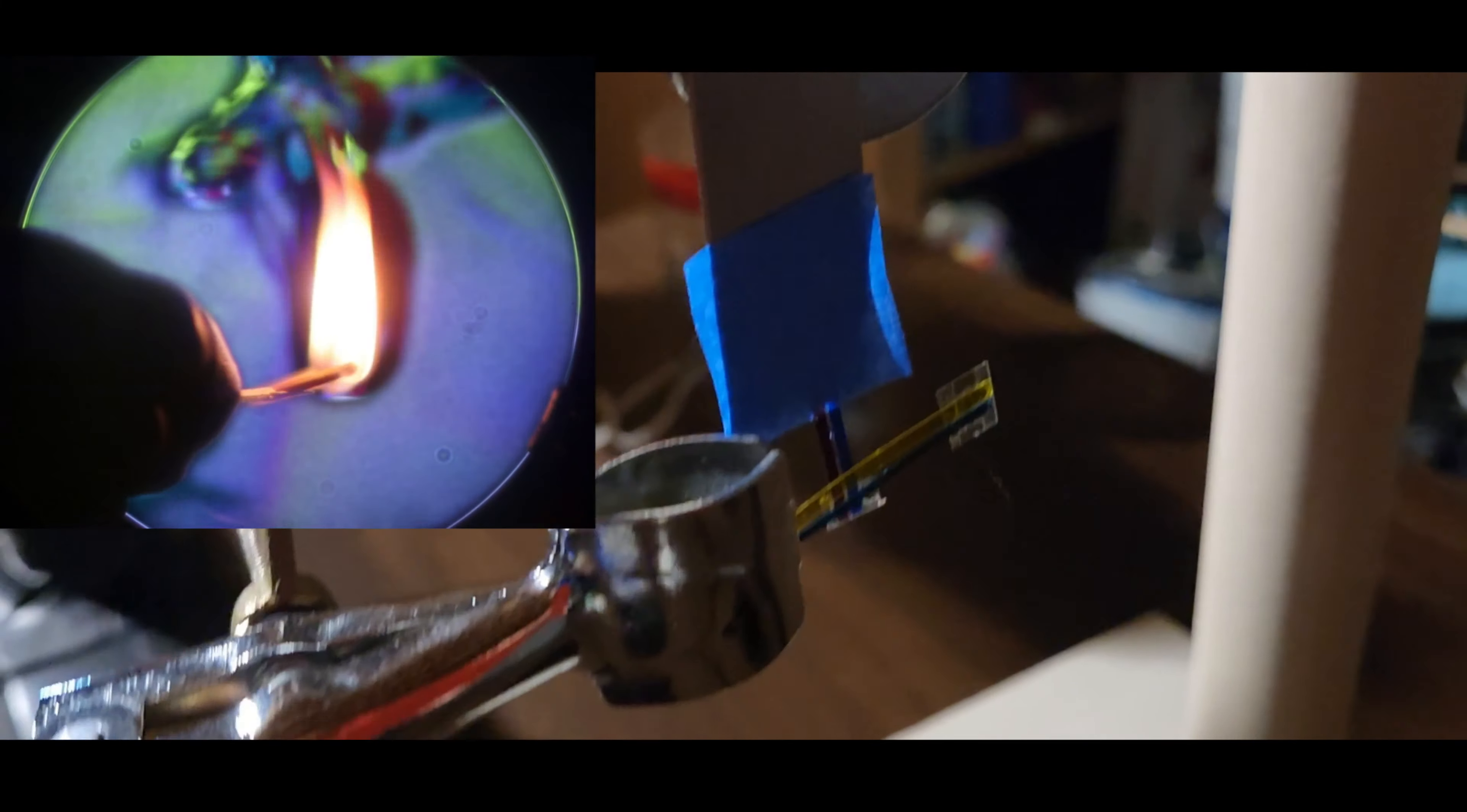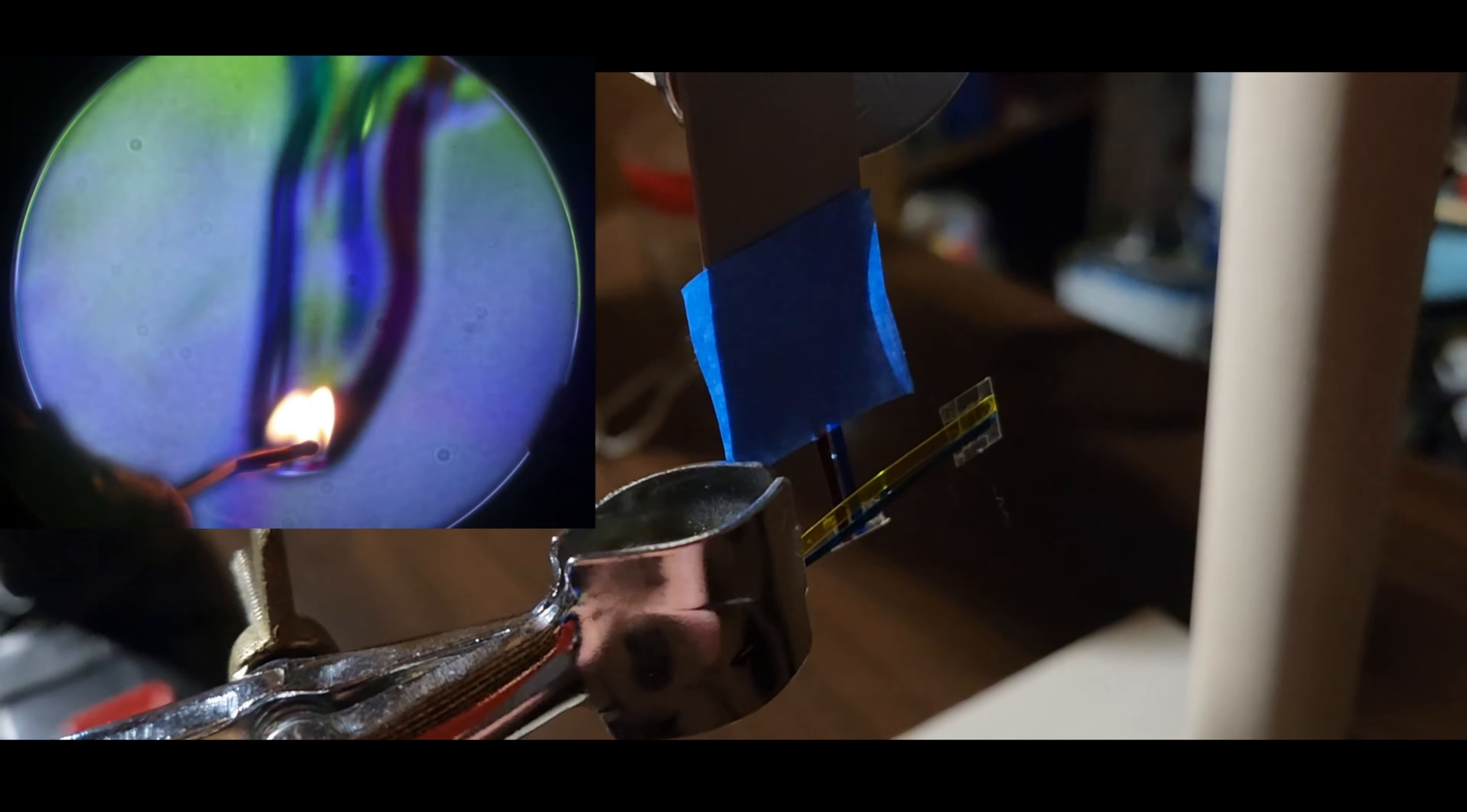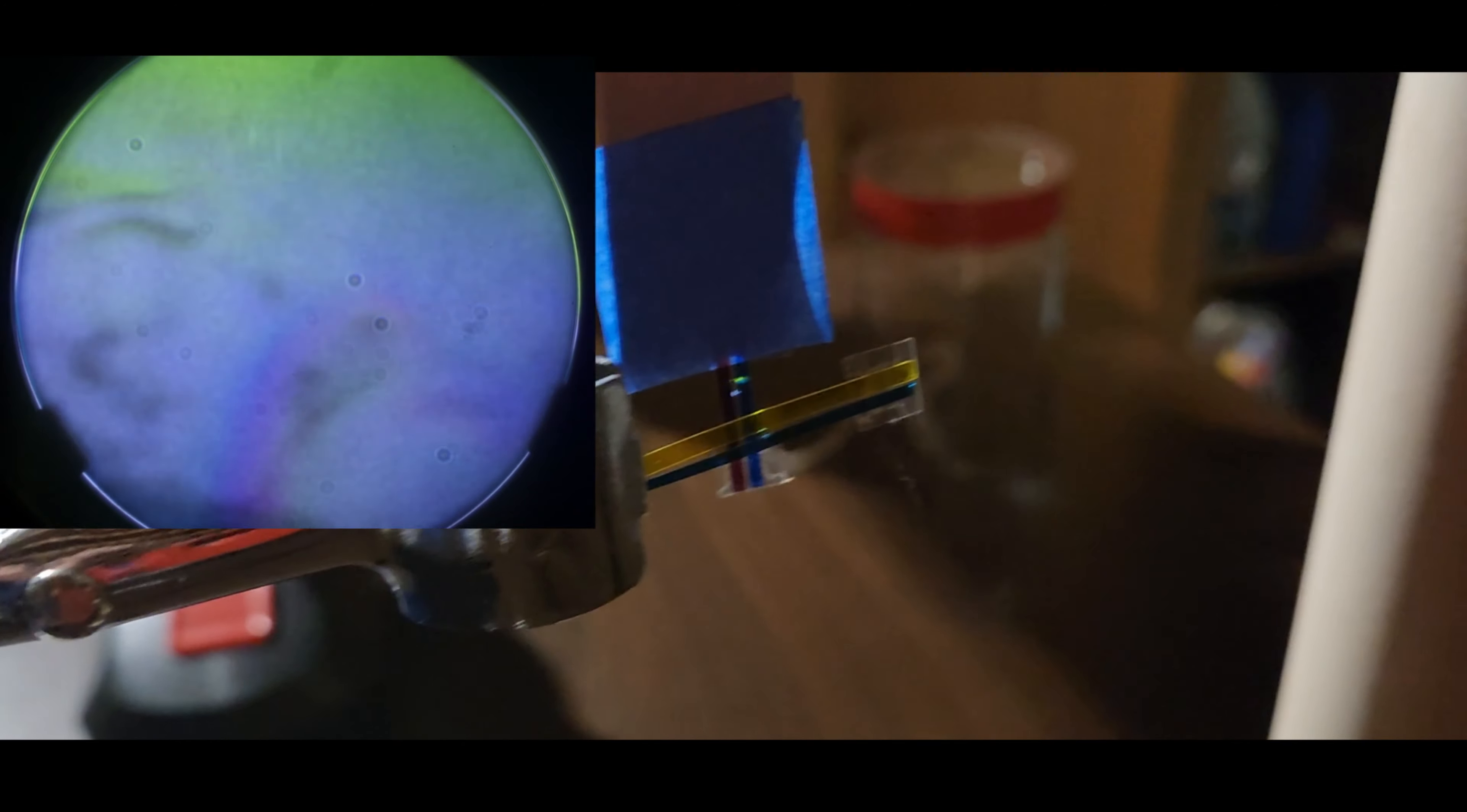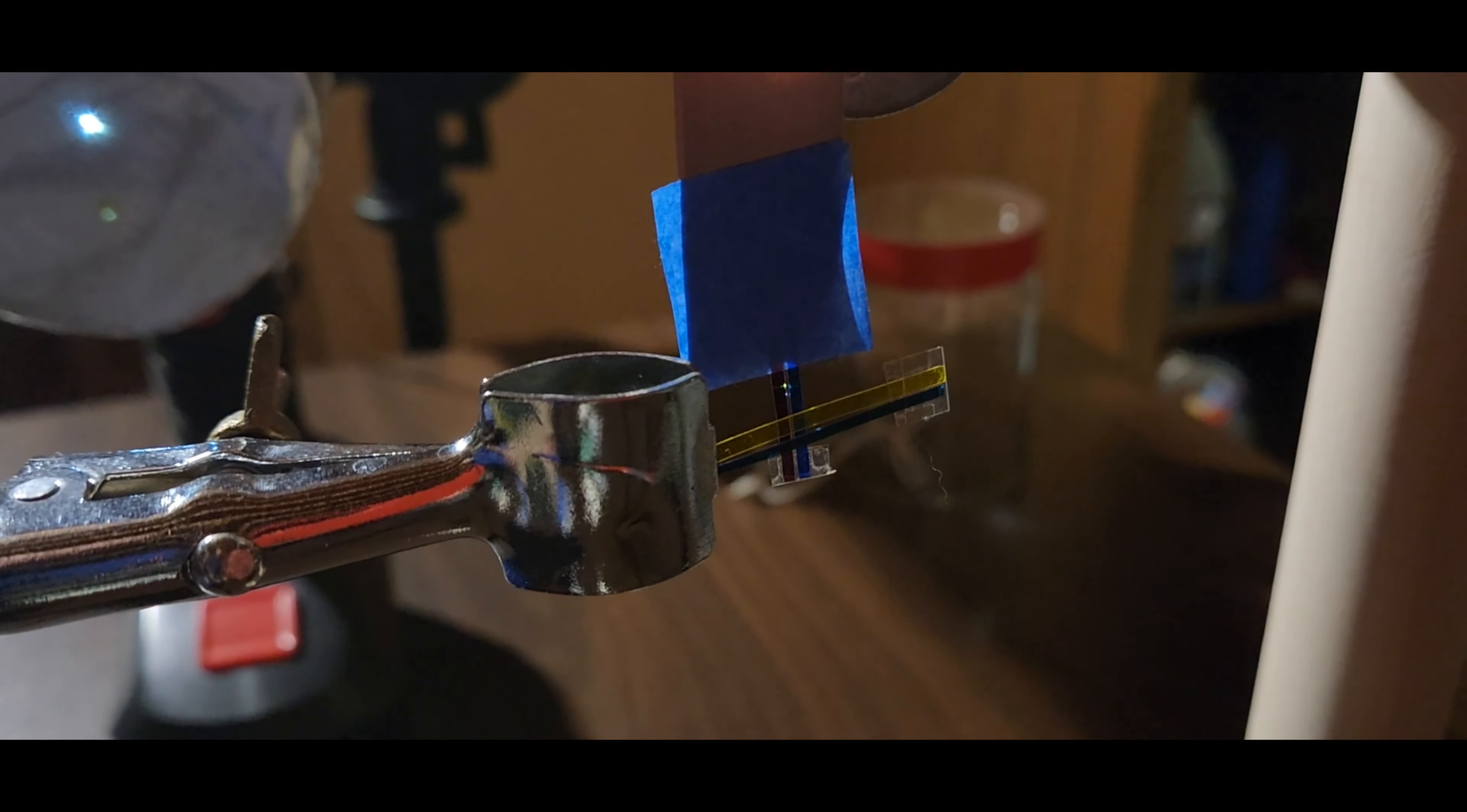And so what that does is that on the screen as this little beam is deflected up and down by whatever my subject is in the Schlieren setup you actually see those changes, the deflection up down left right expressed in different colors. So I really have these four different dimensions of color that I'm producing in the Schlieren setup.